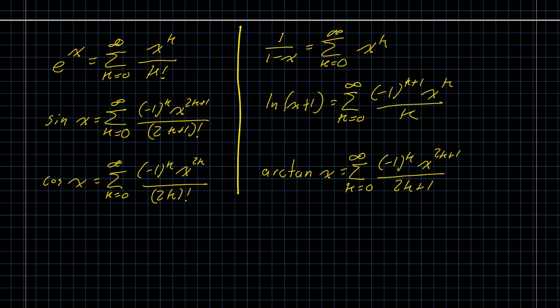That also introduces another problem. The power series representations on the left hand side of your screen, e to the x, sine of x, and cosine of x, are defined for all real numbers. The approximations or the power series representations on the right side of your screen are not. These are all going to have trouble when x is equal to positive 1, negative 1, or both.